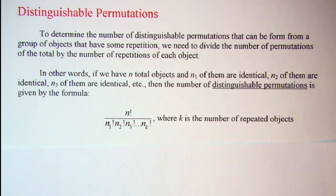In other words, if we have n total objects and n sub 1 of them are identical, n sub 2 of them are identical, n sub 3 of them are identical, and so on, then the number of distinguishable permutations is given by the formula n factorial divided by n sub 1 factorial, n sub 2 factorial, n sub 3 factorial, all the way down to n sub k factorial, where k is the number of repeated objects.